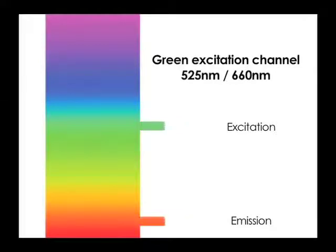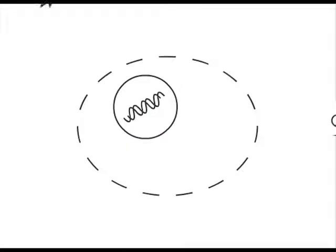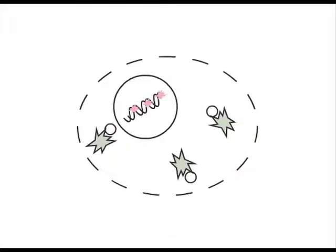Channel 2 of the cellometer has green excitation to detect red emission. For a dead cell, PI enters through the damaged cell membrane and binds to its DNA, producing very strong red fluorescence.